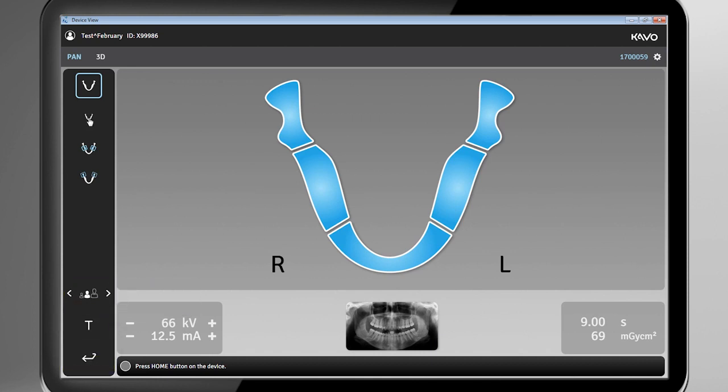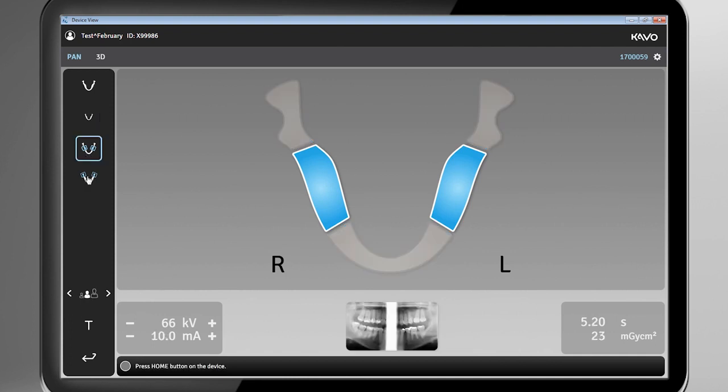There are four types of panoramic imaging programs: standard panoramic, pediatric panoramic, bite wing, TMJ, and TMJ lateral.